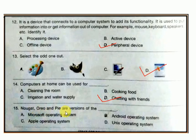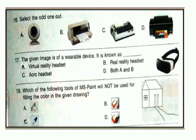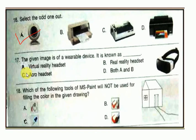Question number 15: Nougat, Oreo, and Pie are versions of the Android operating system. Question number 16: select the odd one out. One of the options is a printer, and this is not a printer. The given image is of a wearable device — it is known as a virtual reality headset.